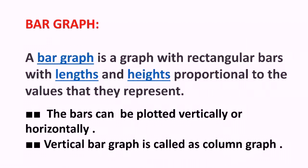The bars can be plotted vertically or horizontally. You need to know what vertically and horizontally mean. Vertical lines are standing lines — think of vertical bar graphs as bars that are standing. Horizontal means sleeping things, like sleeping lines. So vertical bar graph is also called a column graph.